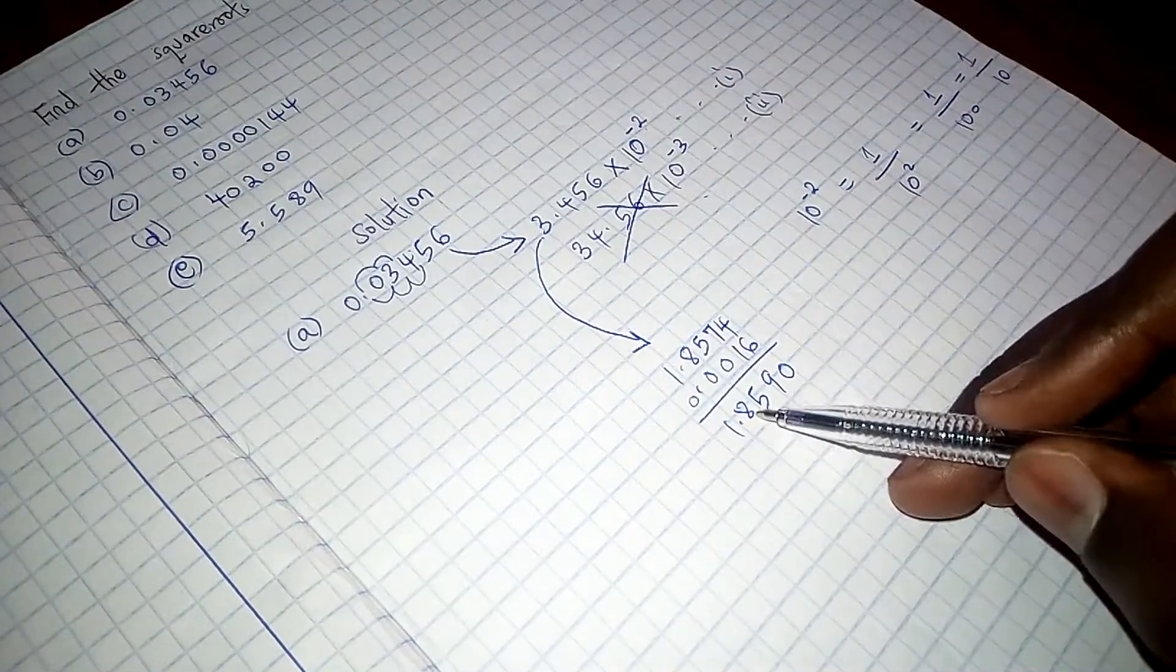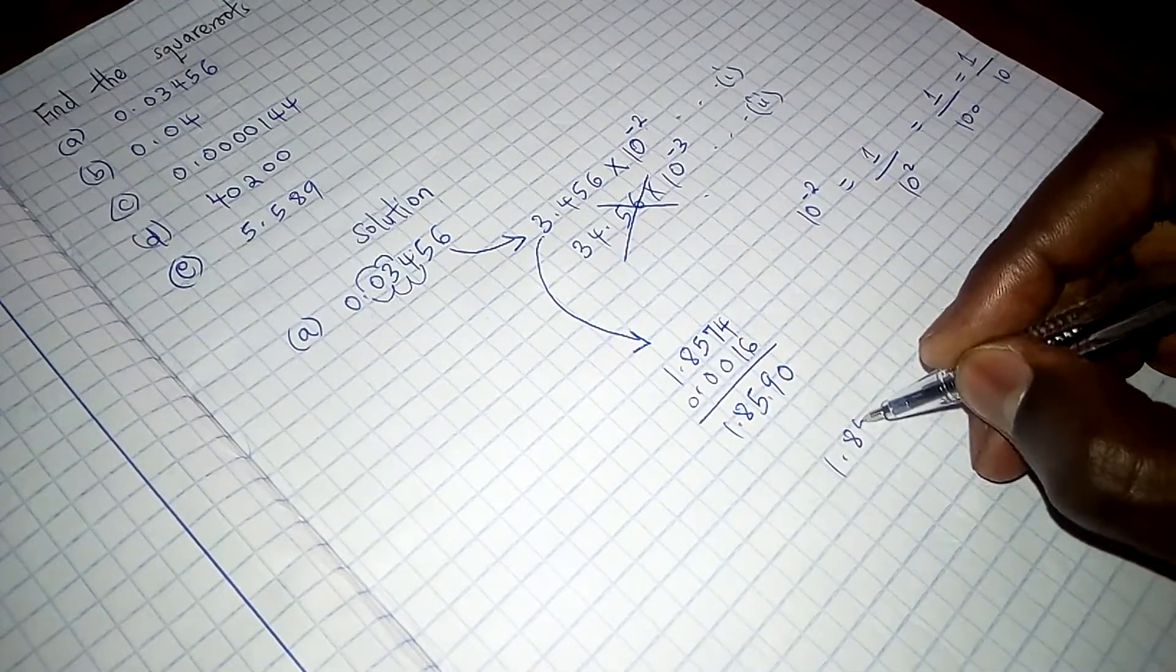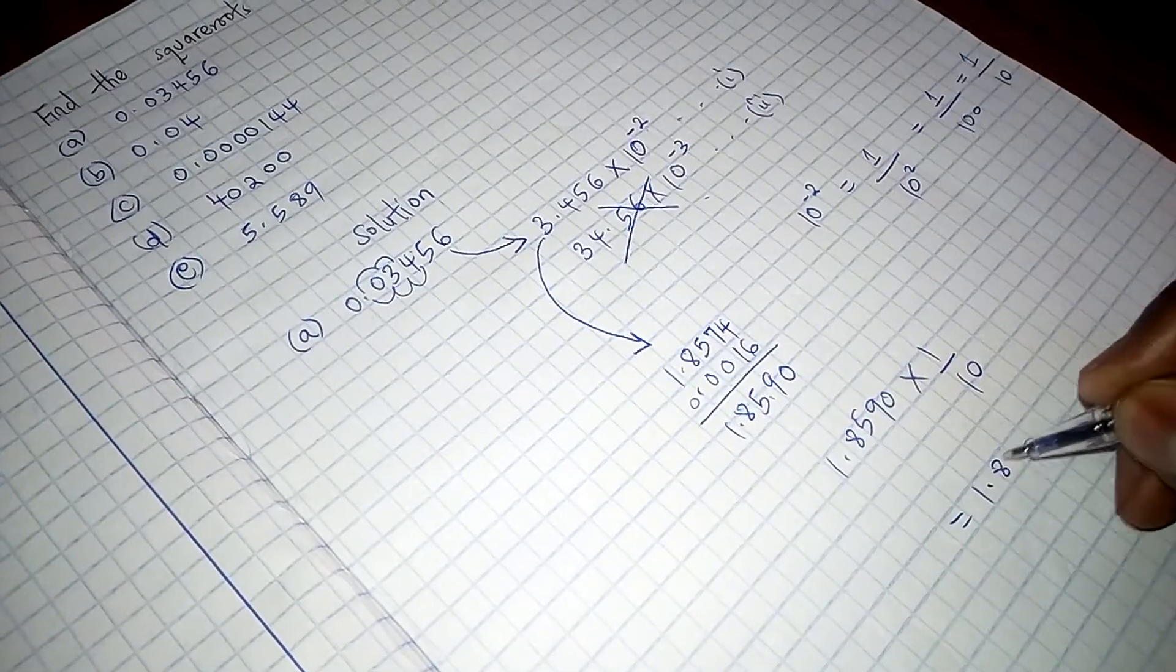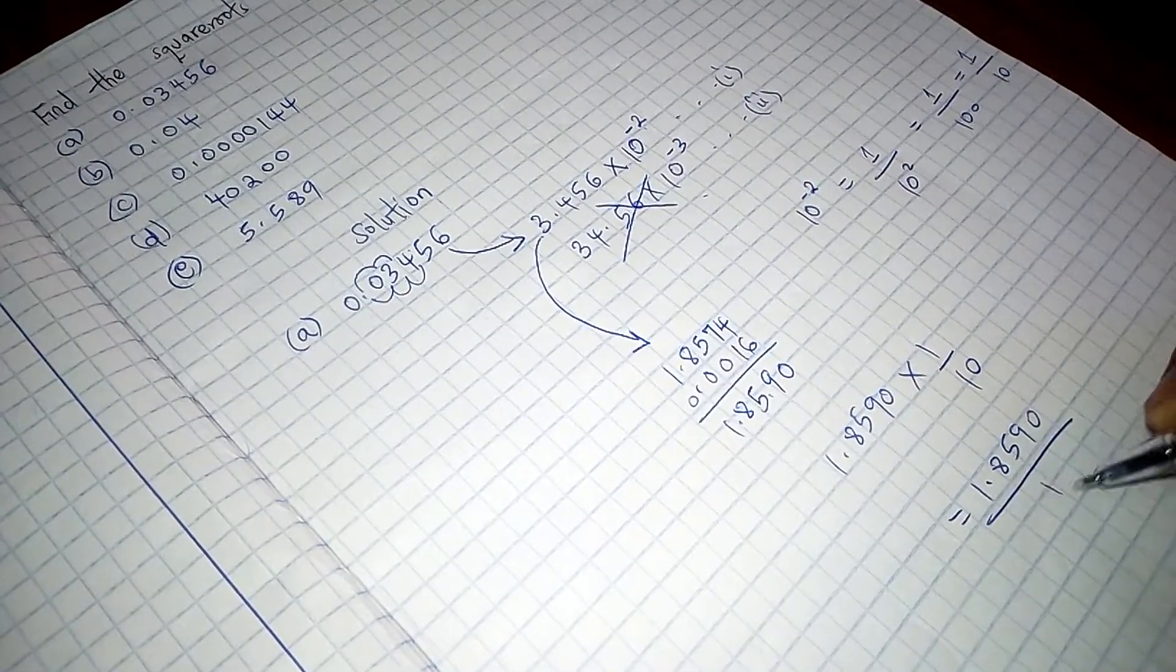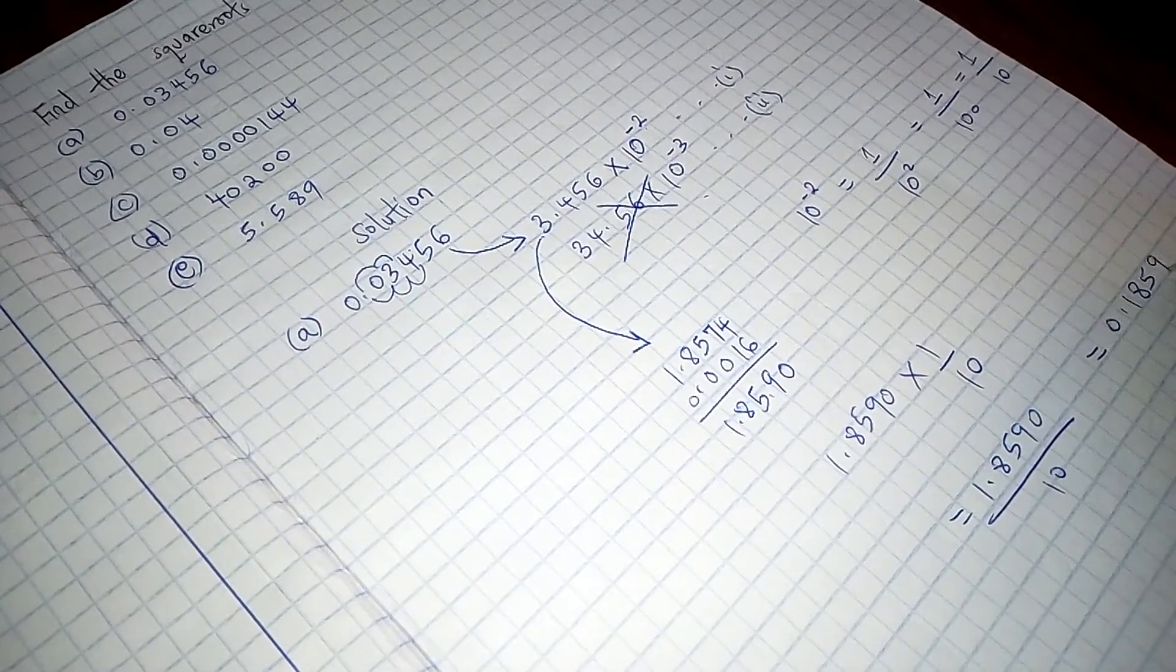We have gotten the square root of this. And therefore we multiply the two, this together with that. So we have 1.8590 multiplied by 1 over 10. And this is just the same as 1.8590 all over 10, which gives us 0.1859.